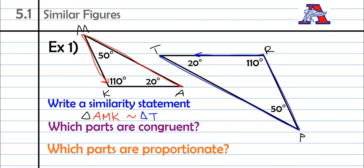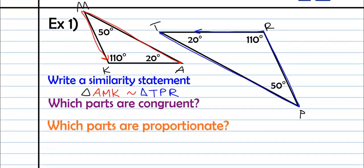So which parts are congruent? The angles are congruent. So angle A is congruent to angle T and we can see that, here's A it's 20, here's T it's 20. Also angle M, since it's in the middle, is congruent to angle P. So let's just check that, we got 50 and 50. And then lastly angle K is congruent to angle R. Those angles are congruent.